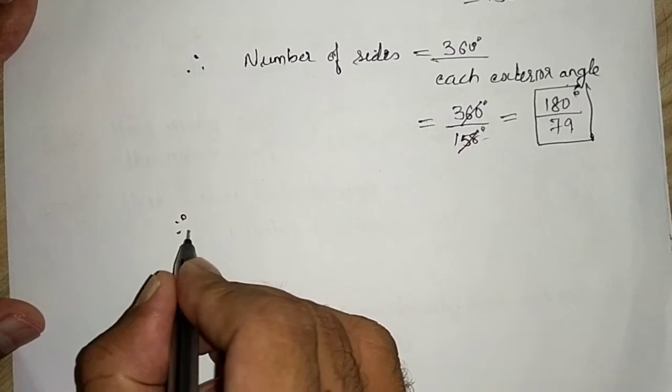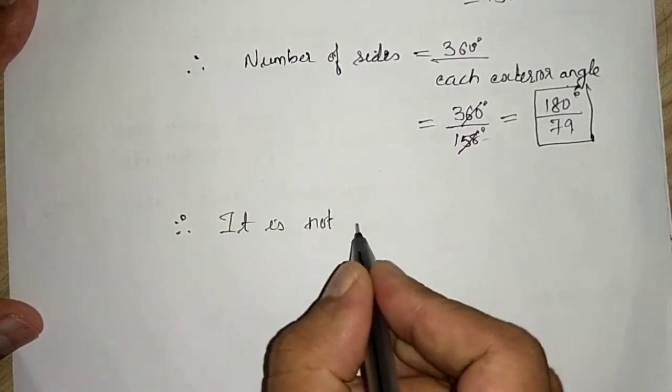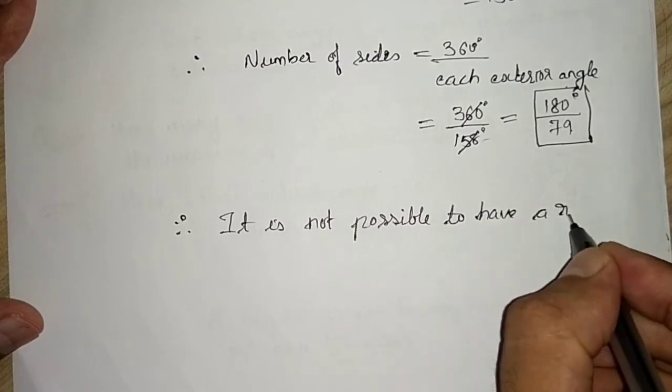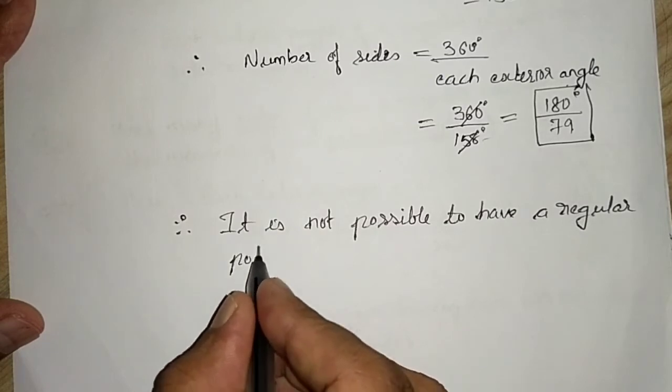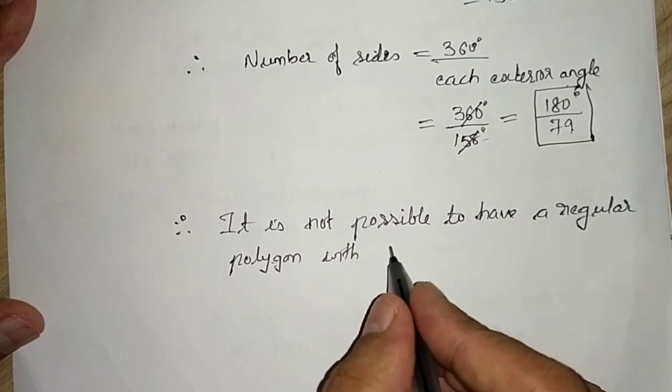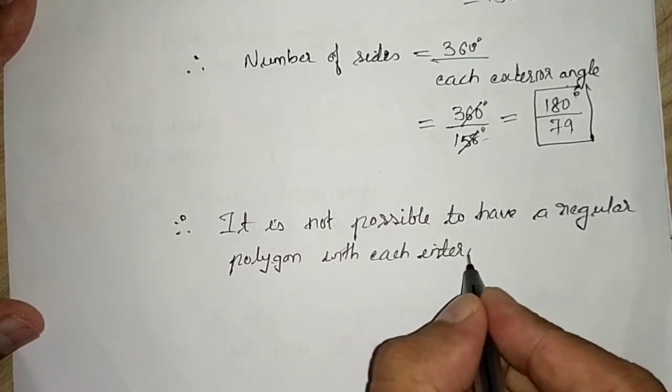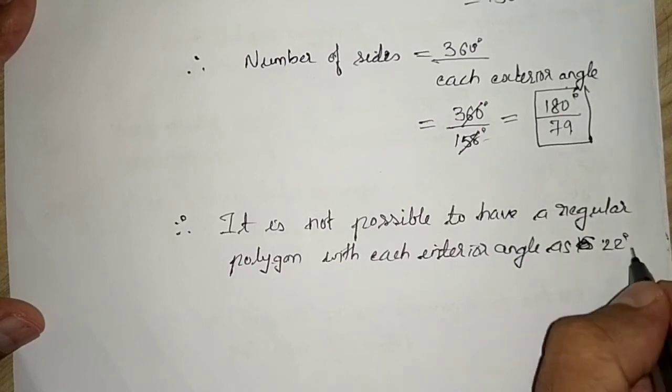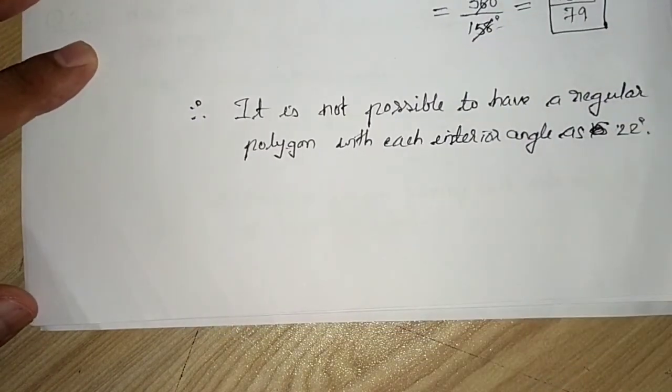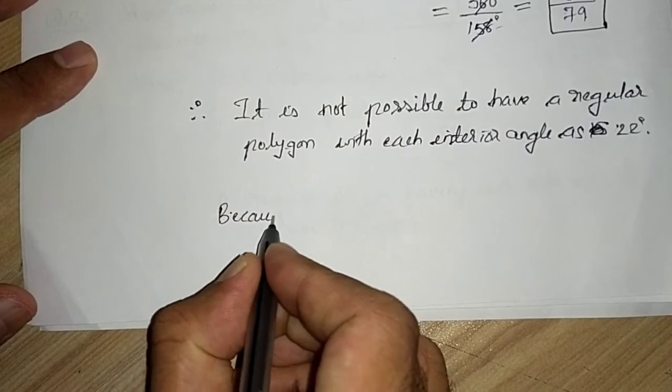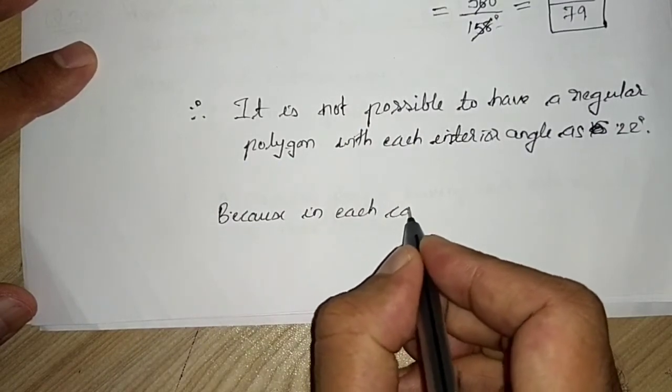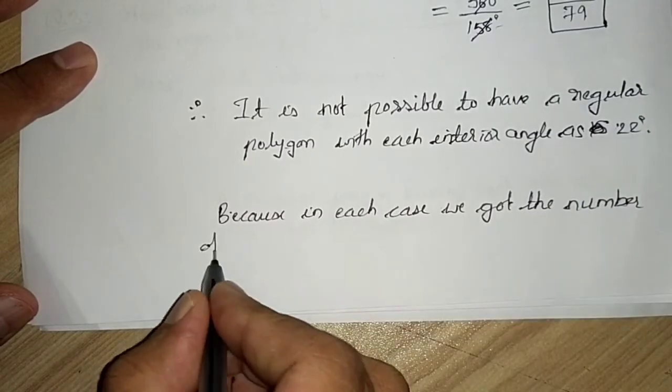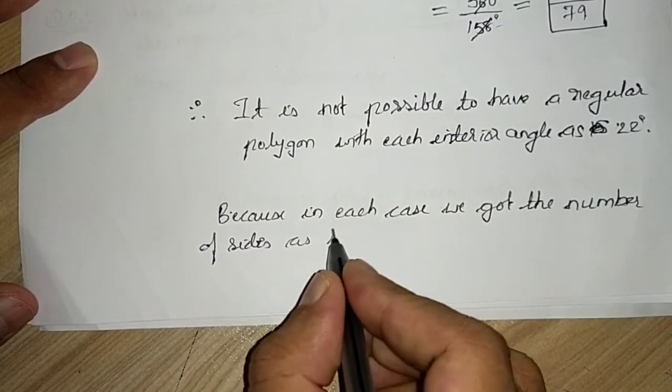So we can say, therefore it is not possible to have a regular polygon with each interior angle as 22 degrees. And now they have also asked why. Because in each case, we got the number of sides as fraction form.